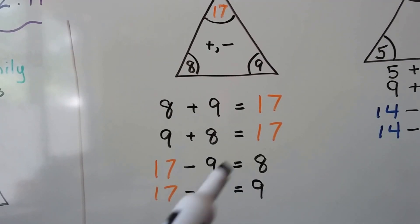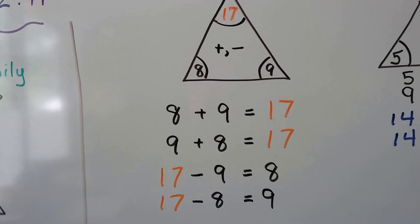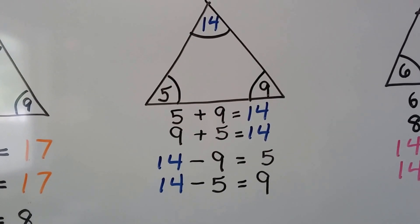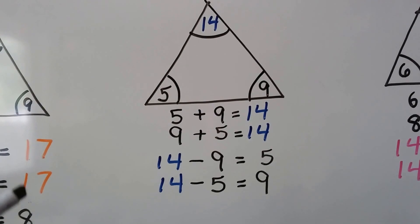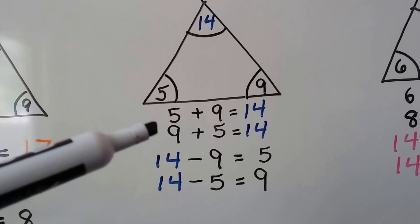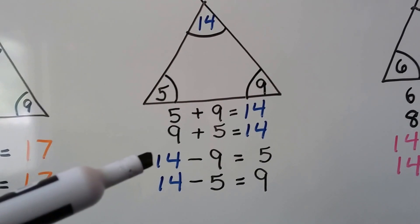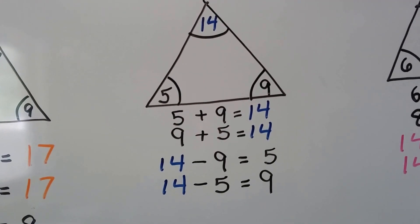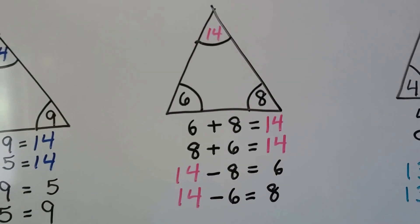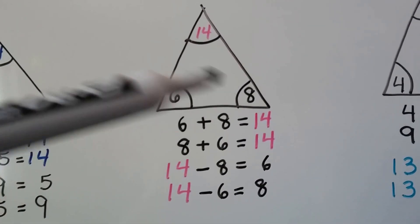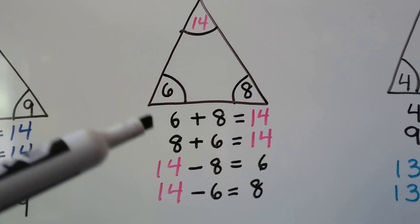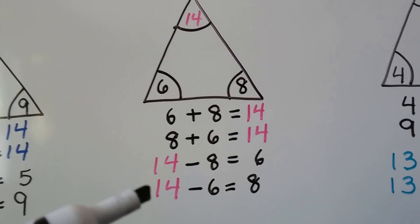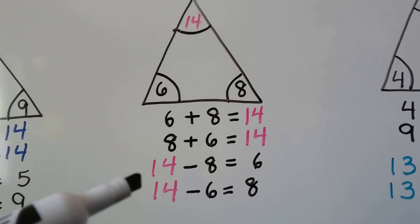Let's look at this one. We've got a 14 on top, so that's going to be our sum for the addition sentences and our minuend for the subtraction sentences. We've got 5 plus 9 equals 14, or 9 plus 5 equals 14. We've got 14 minus 9 equals 5, or 14 minus 5 equals 9. For another 14, we have 6 and 8: 6 plus 8 equals 14, or 8 plus 6 equals 14.